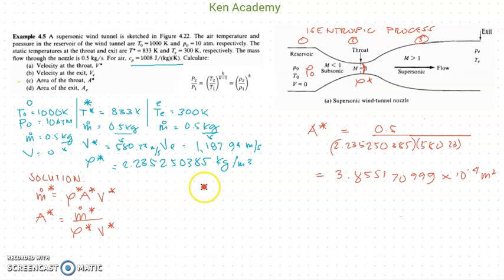It should be in the units of area, which is in meters squared. Now, how do we know the units are correct? Let's try to solve for that one. Kilograms per second, that's the mass flow rate. Density is in kilograms per cubic meter. And then the velocity is in meters per second. Cancel that one out, cancel that one out. We get meters squared. We get the correct units.